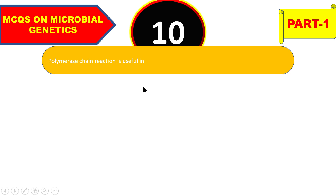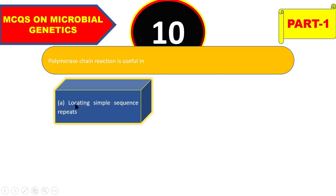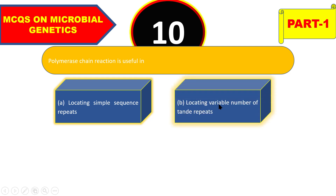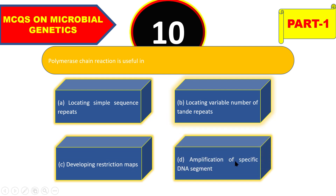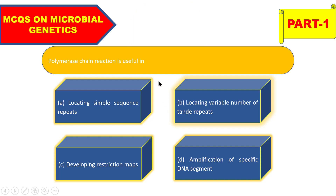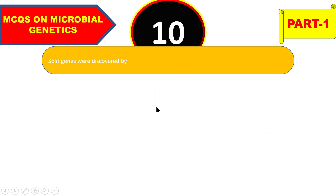Next question: polymerase chain reaction is useful in locating simple sequence repeats, locating variable number of tandem repeats, developing restriction maps, or amplification of specific DNA segment? The right answer is amplification of specific DNA segment.